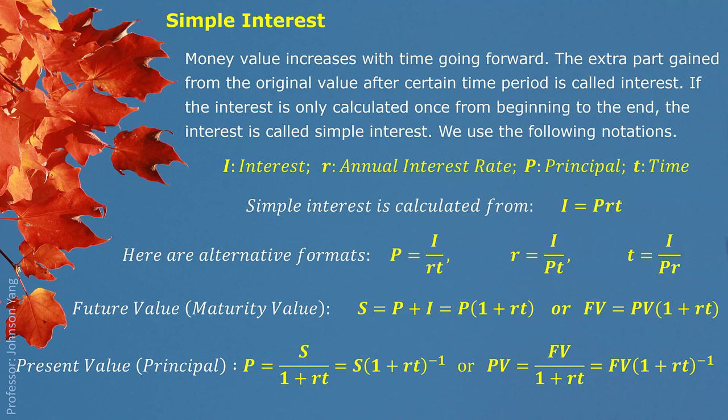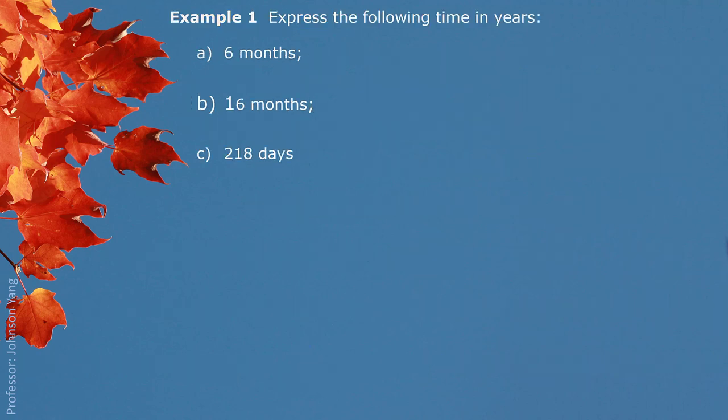Let's look at some examples. Example 1: we try to get familiar with switching time units. We switch 6 months, 16 months, and 218 days to years.